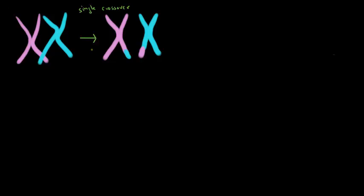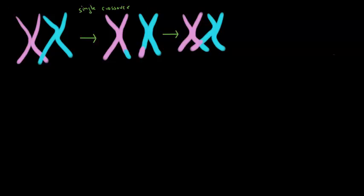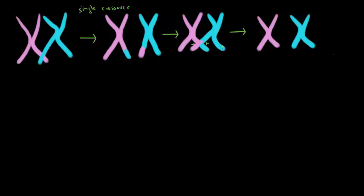It's called a single crossover for the simple reason that they're crossing over once. But sometimes these chromosomes can get close together and might cross over in that same exact spot a second time. In that case we're actually back to square one, because the chromosomes revert to what they originally were — it might not look like crossing over ever happened, but it actually happened twice. This is called a two-strand double crossover.